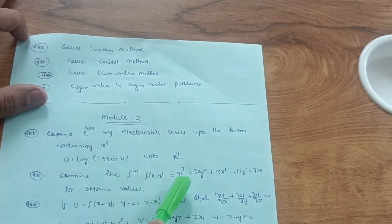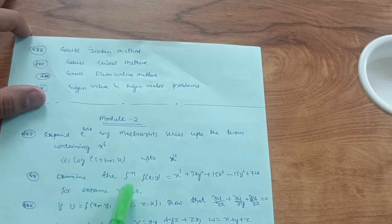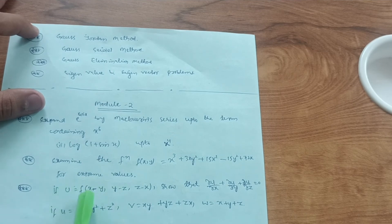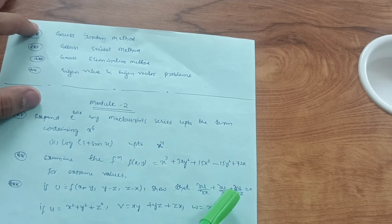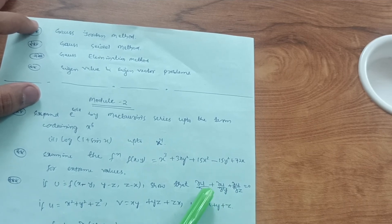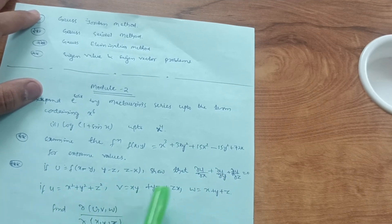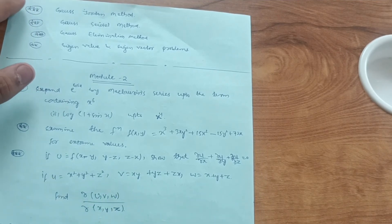Also examine the function f(x, y) = x³ + 3xy² + 15x² − 15y² + 72x for extreme values — focus on maximum-minima problems and try three to four problems from this concept. Additionally, if u = f(x−y, y−z, z−x), show that ∂u/∂x + ∂u/∂y + ∂u/∂z = 0. Another important question: if u = x²+y²+z², v = xy+yz+zx, w = x+y+z, find ∂(u,v,w)/∂(x,y,z).